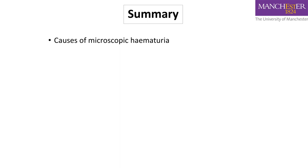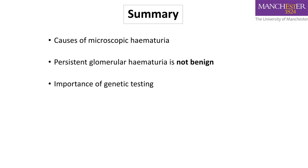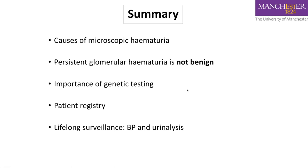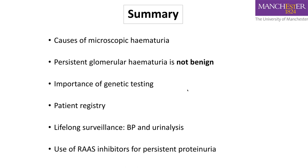In summary, microscopic hematuria with persistent familial occurrence should not be considered a benign condition — investigate until you have an explanation. Genetic testing is important. On confirmation of genetic abnormality, register patients and gather prospective data through registries. Recommend lifelong surveillance with annual blood pressure and urinalysis, and use RAS inhibitors for persistent proteinuria.